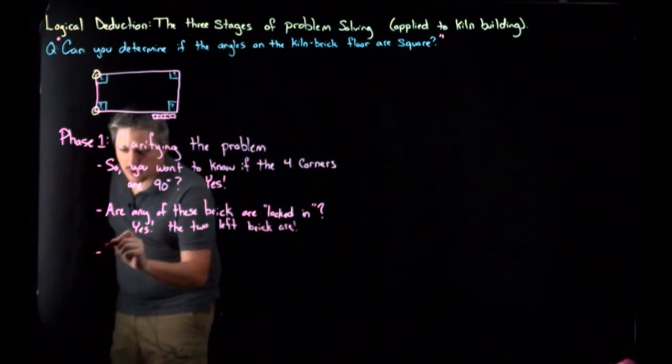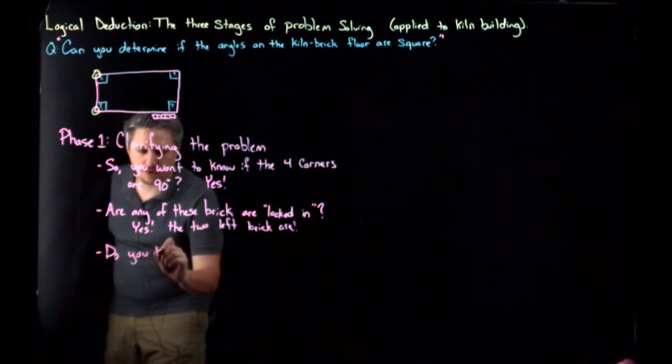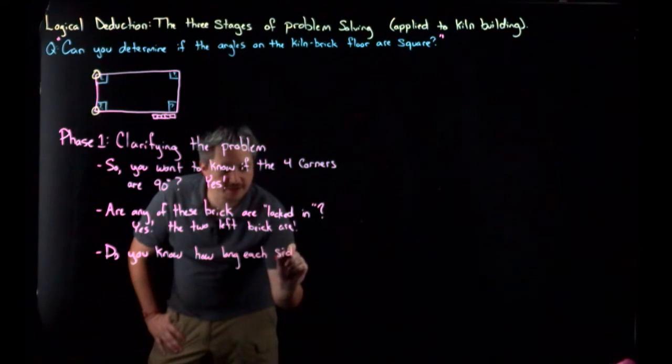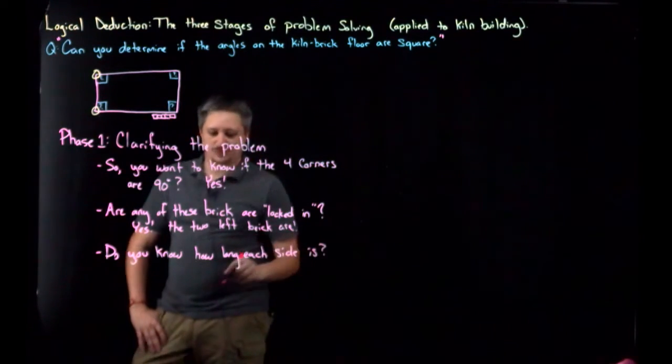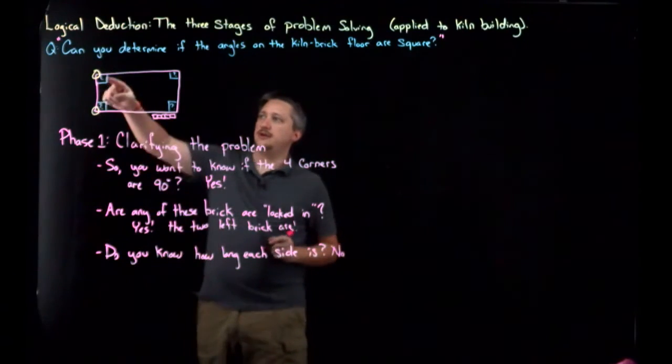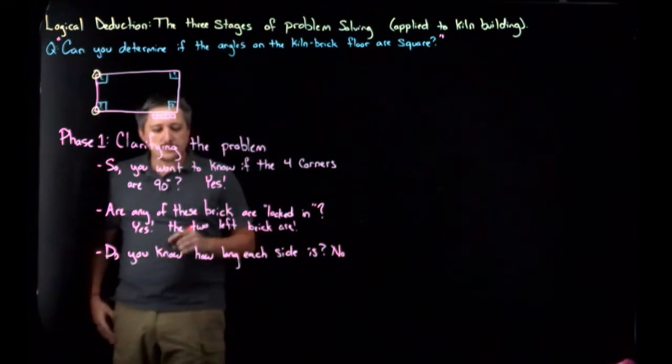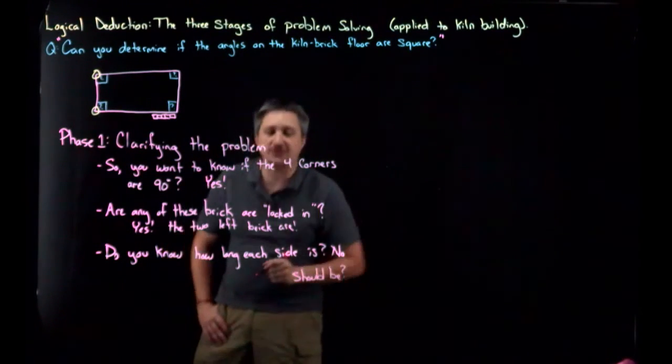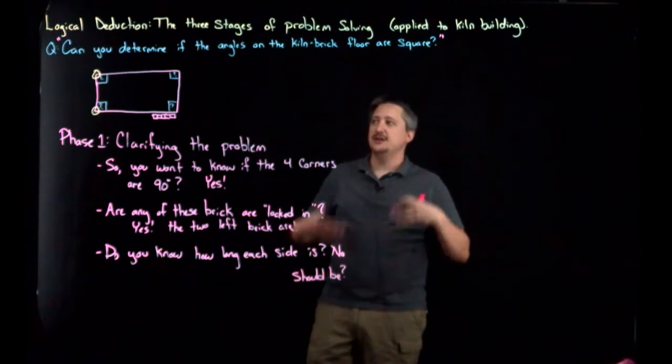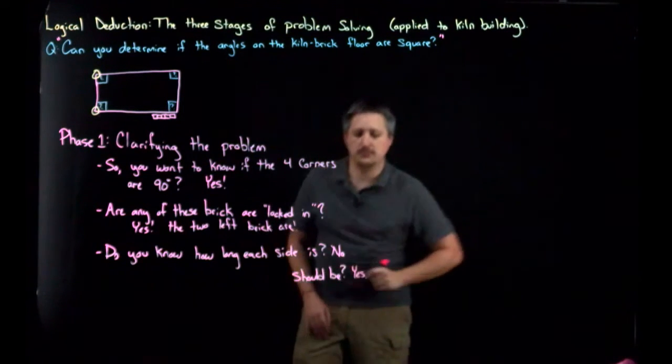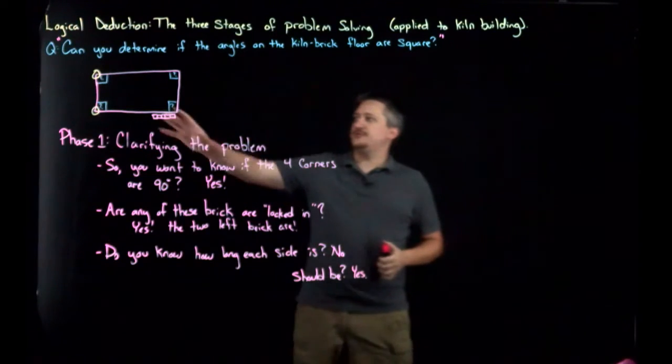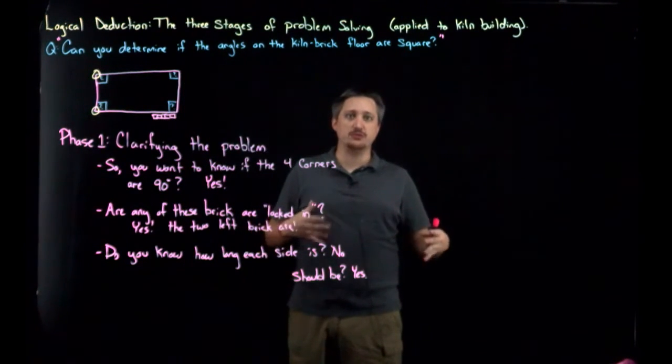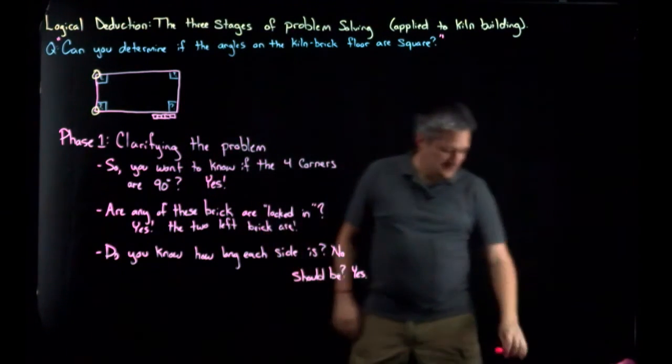And the last question I asked her was really a two-part question. Do you know how long each side is? To which she said, no, she didn't think to measure the length of these sides directly. And do you know how long each side should be? Meaning, in her actual blueprints, in her theoretical version of this thing, does she know what those lengths are? To which she said, yes.